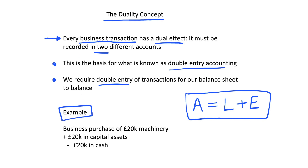Our example is that a business purchases £20,000 worth of machinery. The impact is going to be felt in two places. First, we have an increase in capital assets — we've bought some machinery, so we have an increase in assets. For our fundamental accounting equation, we have an increase in A. However, if we increase our assets, this is no longer going to balance, because originally A was equal to L plus E, but now A has increased.